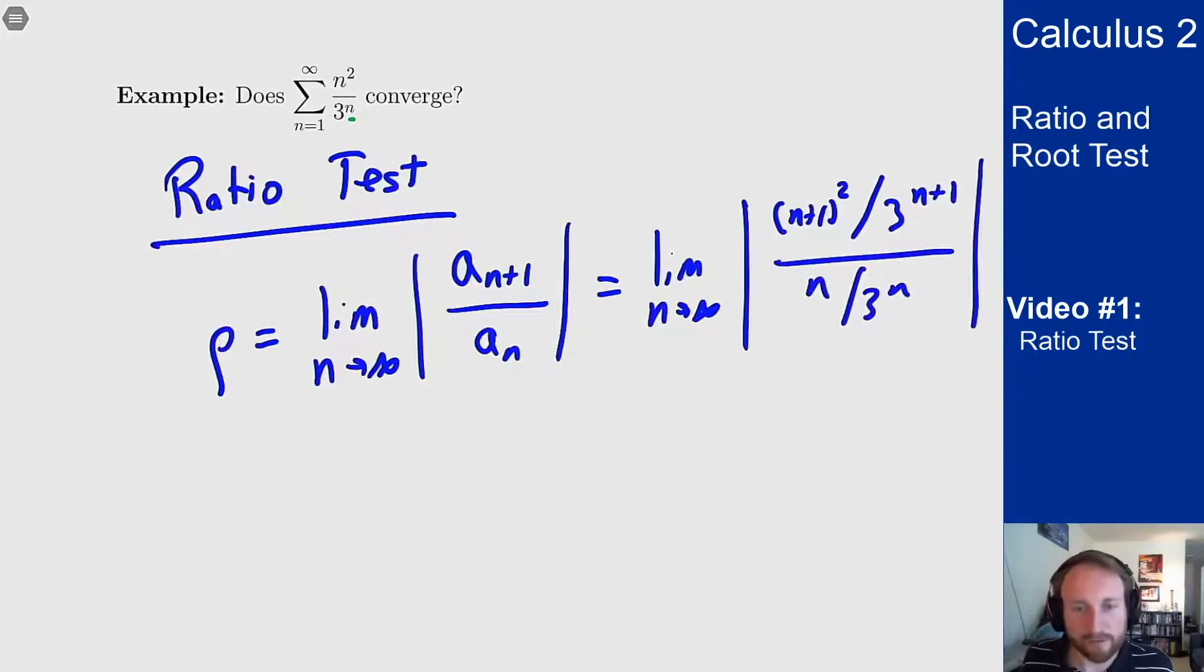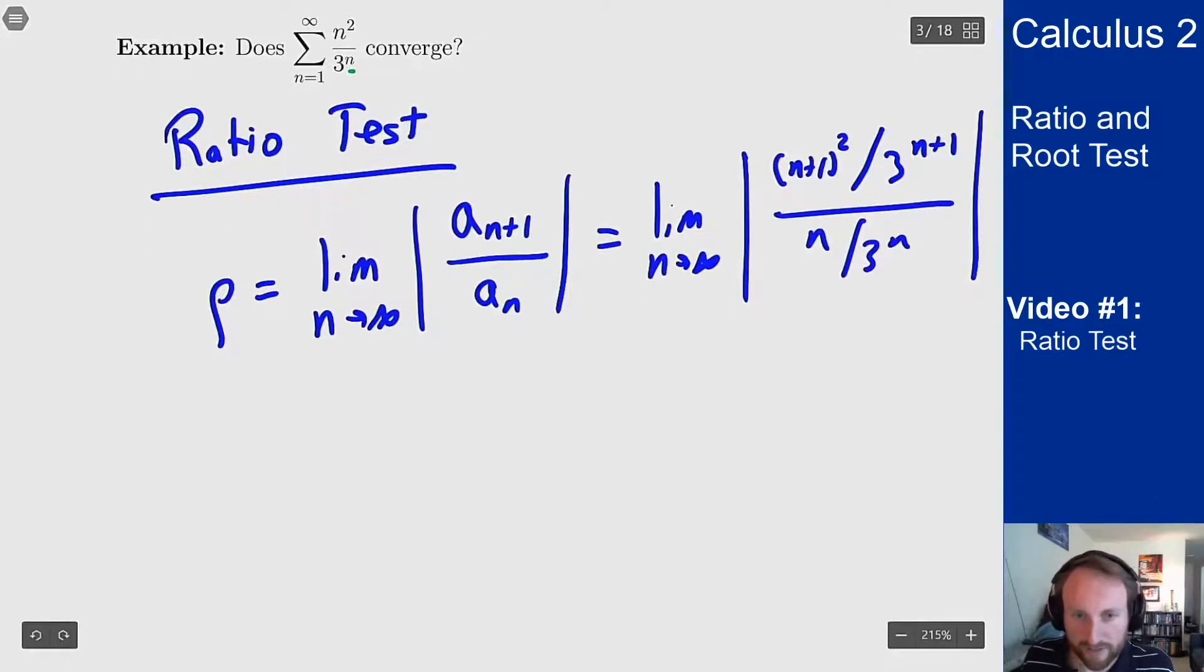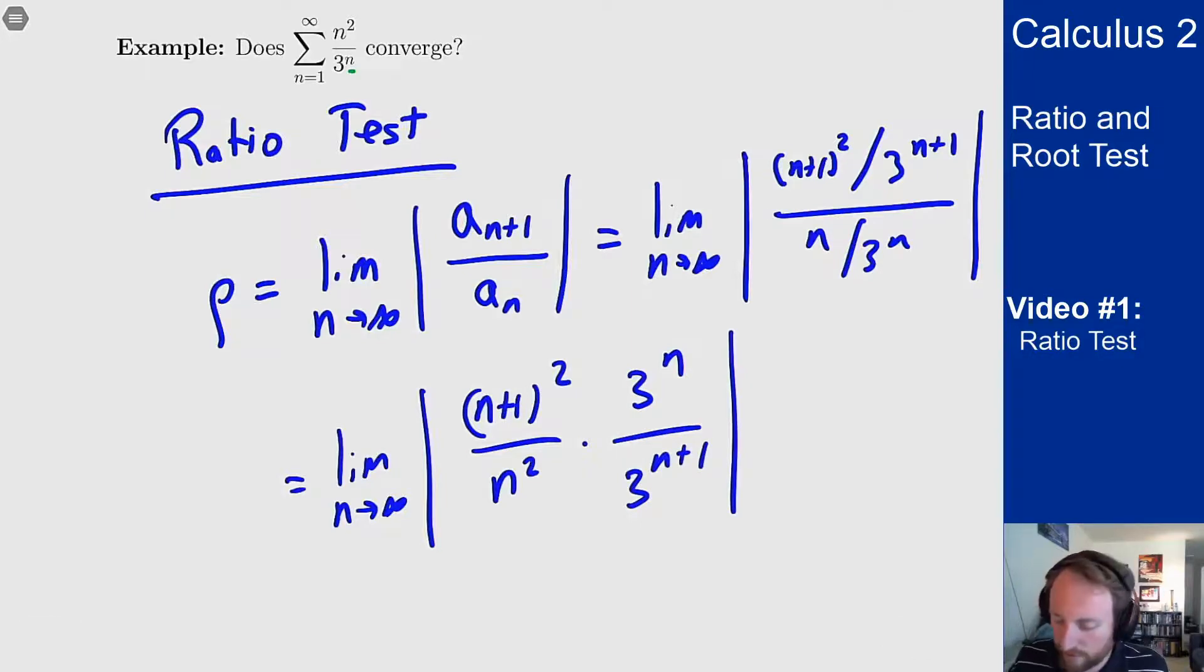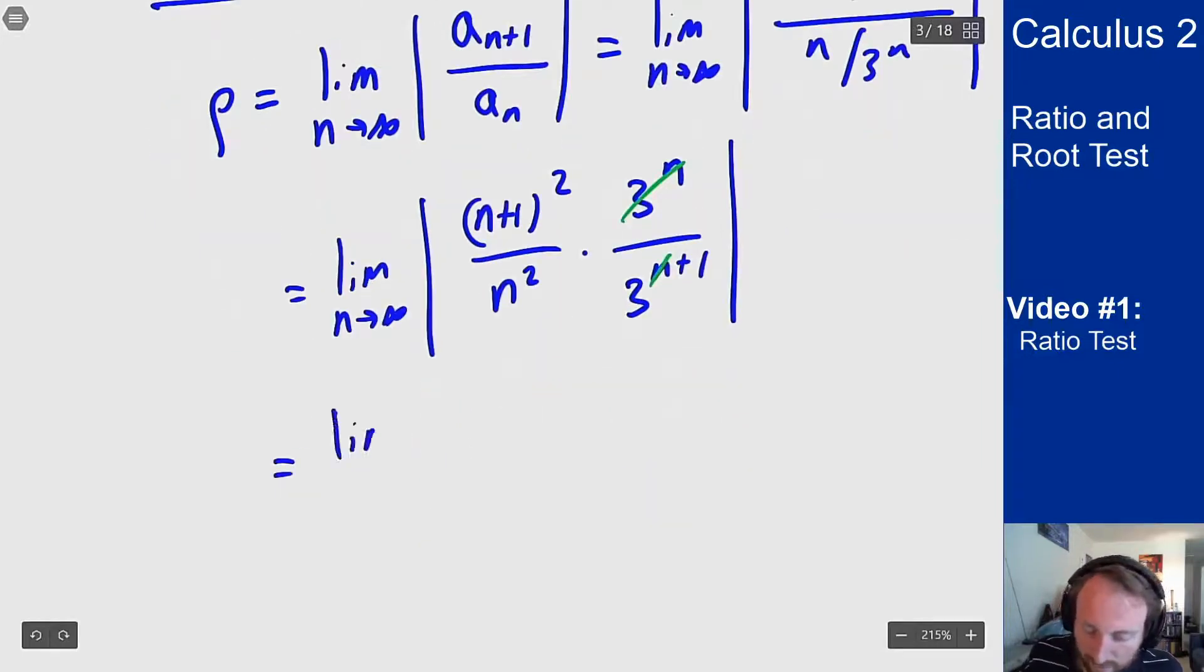I can rearrange these fractions a little bit by flipping the one over putting it on top. That will give me the limit as n goes to infinity of (n+1)² over n² times 3^n over 3^{n+1}. I can then cancel a bunch of the 3's, this will cancel all but one 3 on the bottom leaving one on the bottom giving me the limit as n goes to infinity of (n+1)² over n² times 1/3.